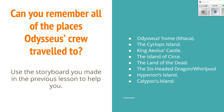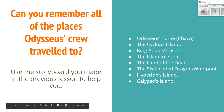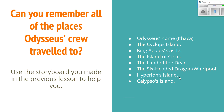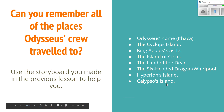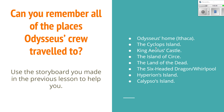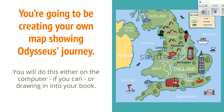Odysseus told his crew not to eat any of the cattle, and yet they did, and they all later died. Odysseus was then all on his own, and that's how he got to Calypso's island, where he was there for seven whole years because Calypso was in love with him. But he was loyal to his wife Penelope back home, and eventually he did manage to get all the way back to his home in Ithaca.